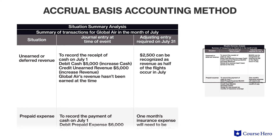Assume further that Global Air reports on a fiscal year ending July 31st. Using the accrual basis of accounting, adjusting entries are recorded at the end of the fiscal year, July 31st. Imagine that Global Air receives $5,000 cash in ticket sales on July 1st and half of the company's flights occur in July while the other half occur in August. The required adjusting entry on July 31st is half of the cash, or $2,500, because only half of the cash has been earned. Therefore, $2,500 will be recognized as revenue and $2,500 will remain as unearned revenue, a liability.